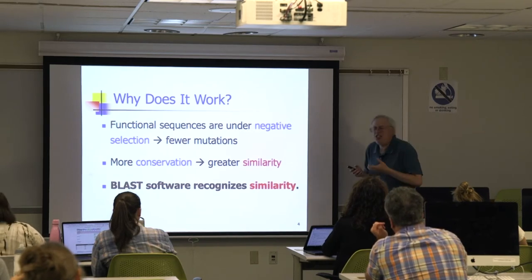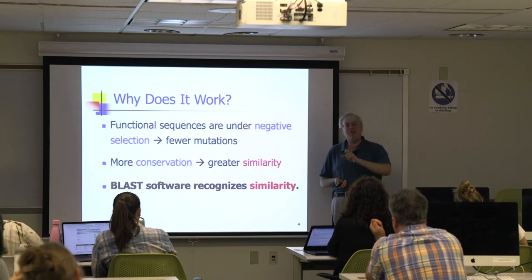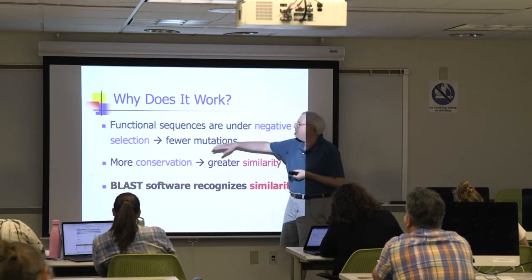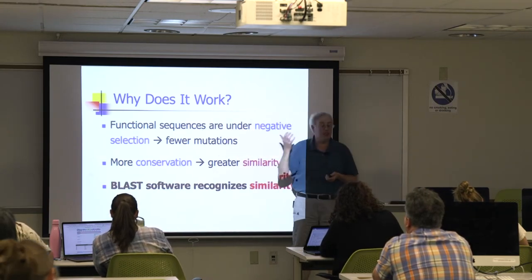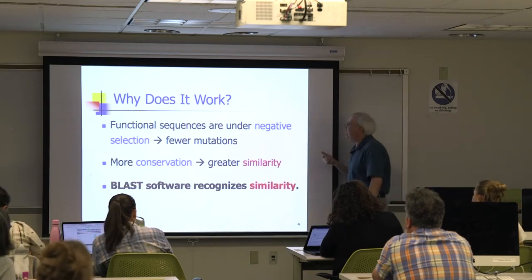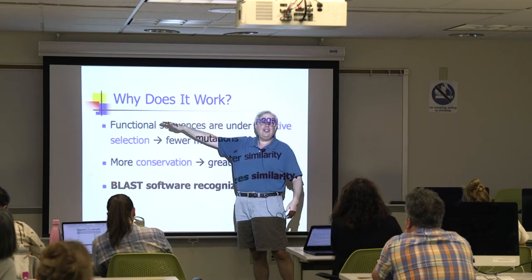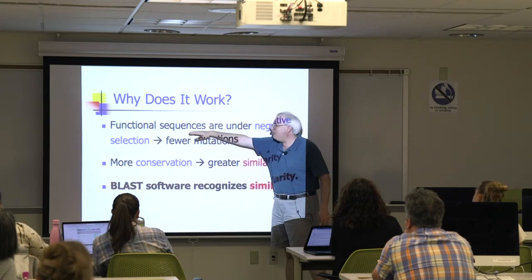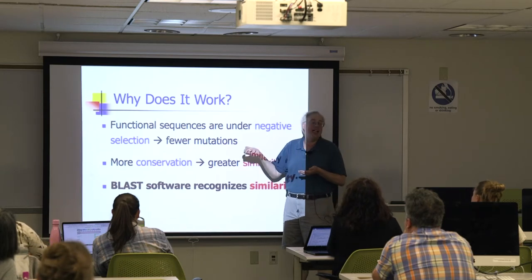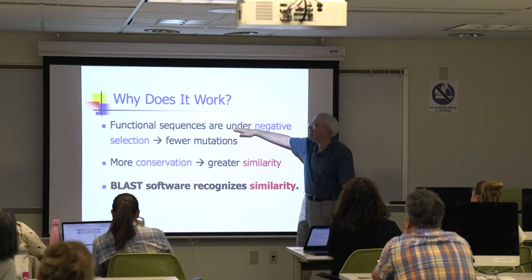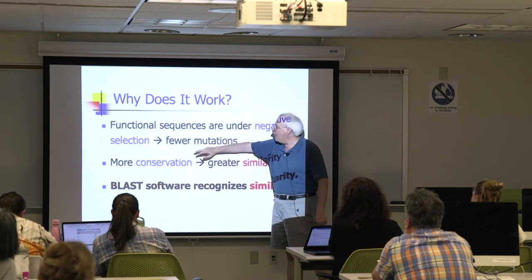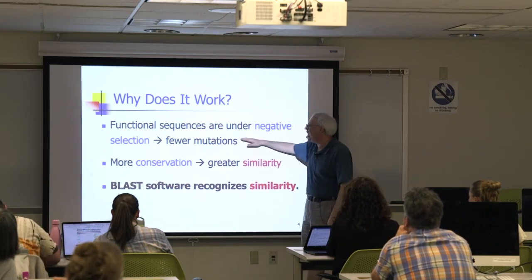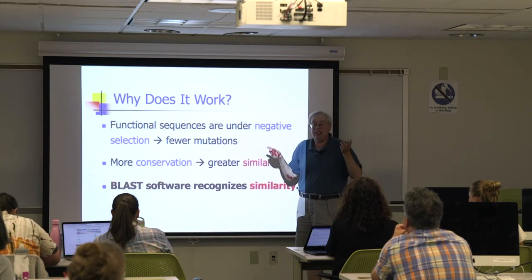But why are we allowed to do that? Why does that inference make sense? It's not a one-step inference — it's a chain. We're looking for sequences with conserved functions, trying to identify what a sequence does. We assume that if the sequence is functional, the function is encoded in the sequence itself. If the function is to persist over time, changing the sequence would probably mess it up. So functional sequences are going to be under negative selection, and over time you'll see fewer mutations in functional regions than non-functional ones — they're protected against mutation by natural selection.